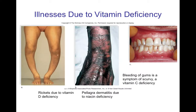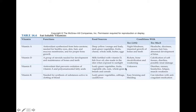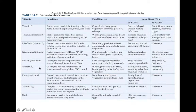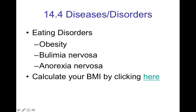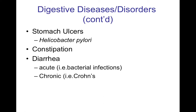You'll want to be familiar with what happens when you have too much or too little of various vitamins and minerals. The fat-soluble vitamins are A, D, E, and K. Various additional vitamins from the text should also be studied. Relevant disorders to know include obesity, bulimia, anorexia, constipation, diarrhea, and H. pylori.